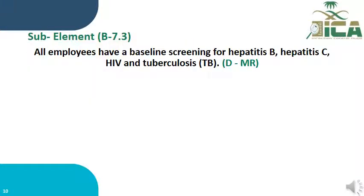Sub-element B7.3 states that all employees must have baseline screening for hepatitis B, hepatitis C, HIV, and tuberculosis. This is assessed through document review and medical records. Based on the policy reviewed in B7.1, you will ask for a random sample of healthcare worker medical records to verify whether baseline screening was performed.